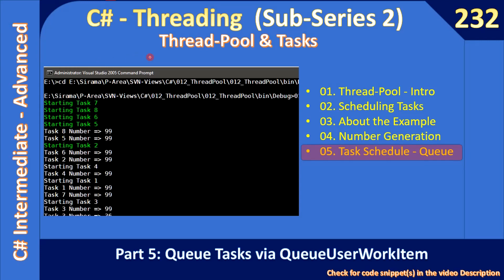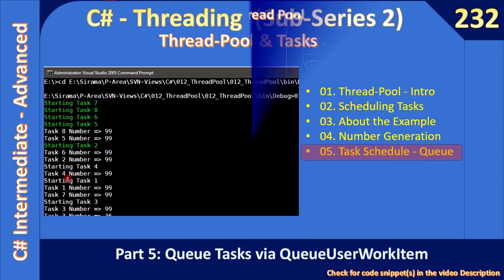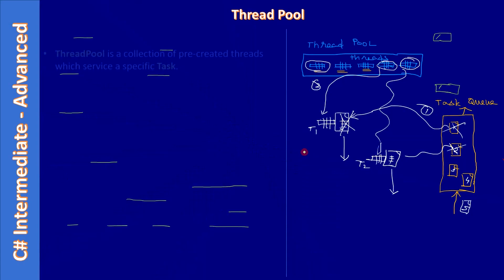Hello friends, welcome to the C# intermediate to advanced tutorial. You are watching the final part of the sub-series on thread pool and task. In this video we will create a queue task and learn how the QueueUserWorkItem API of the thread pool helps us add queue tasks, and we will see how multiple tasks run in parallel to generate random numbers and display them in the console output window.